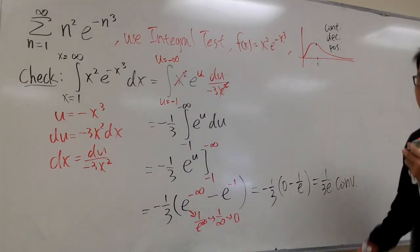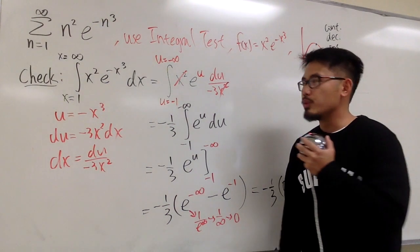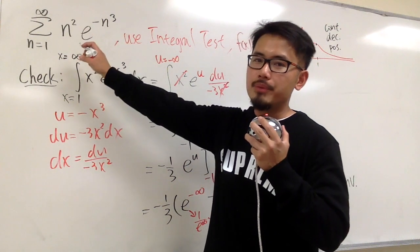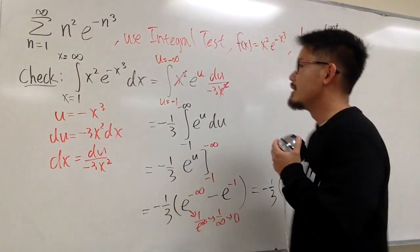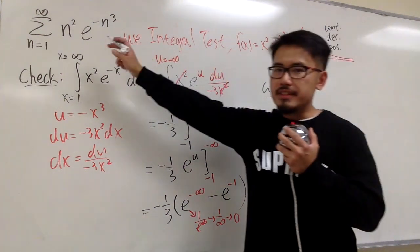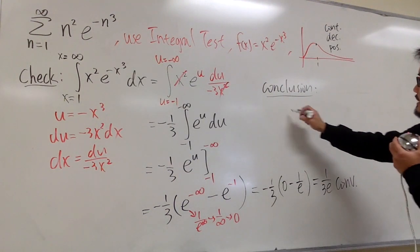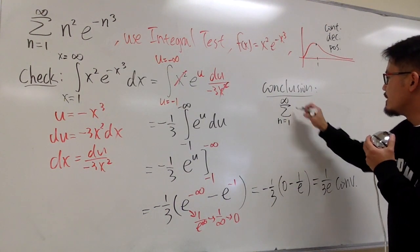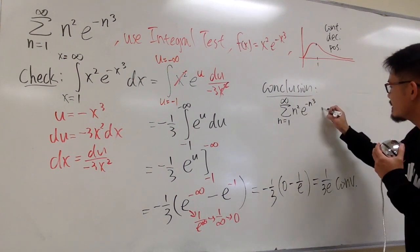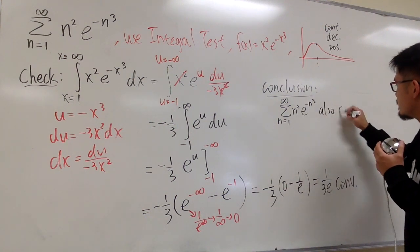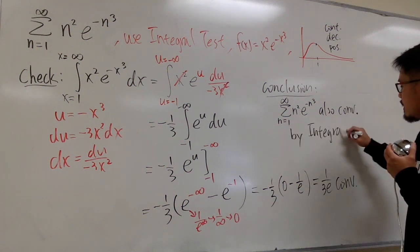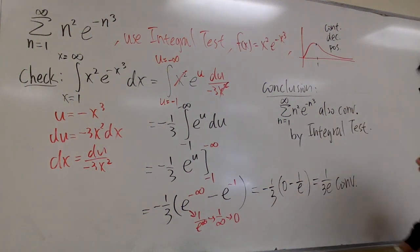By the integral test, since the improper integral converges, the original infinite series — sigma from n = 1 to infinity of n squared times e to the negative n to the third power — also converges, by the integral test.